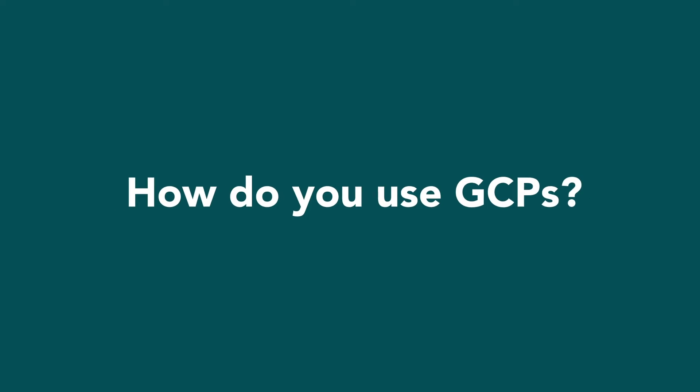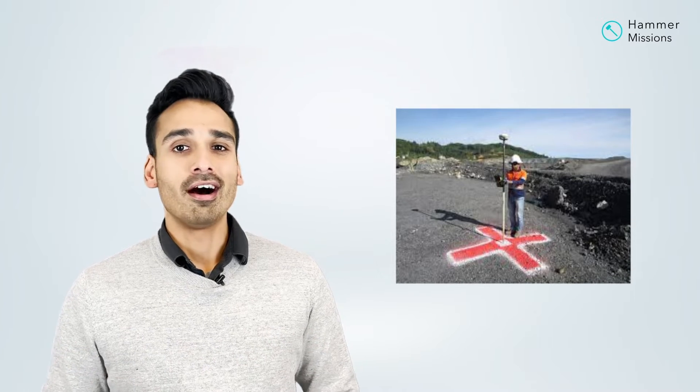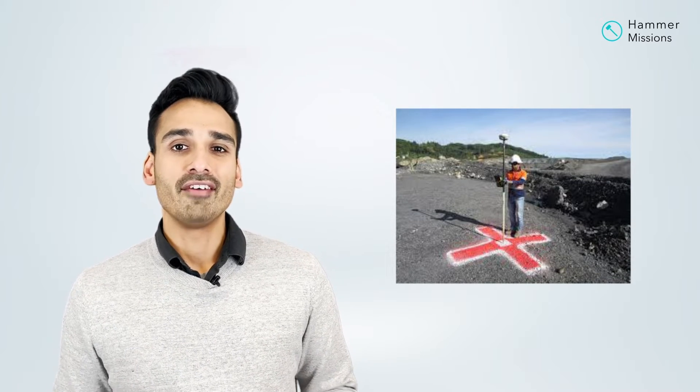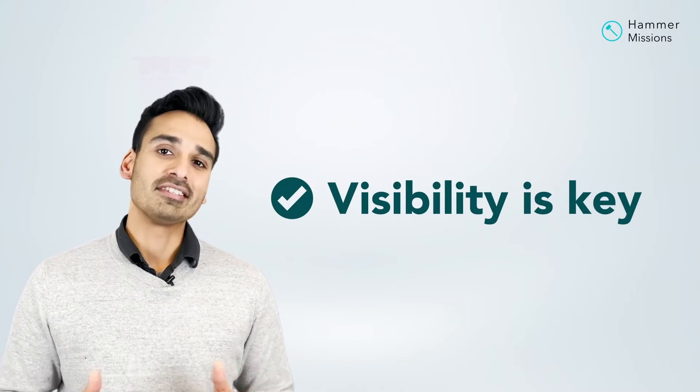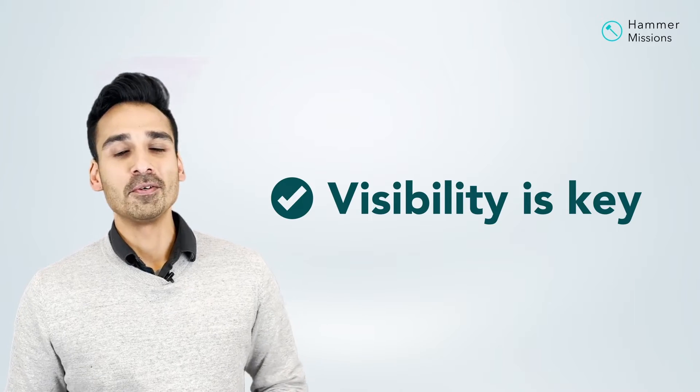Assuming you now understand how GCPs are going to be placed — what do you actually use? GCPs are typically checkerboard-style markers, but you can also use spray paint to create your own, or use other types of markers available off the shelf. Really, you can use anything that will be identifiable in a drone image. What you want is to be able to recognize that point later on in the image — so any marker that's visible in the drone image will work.